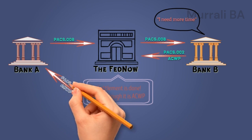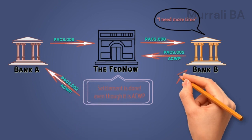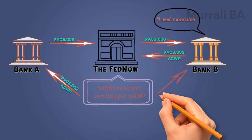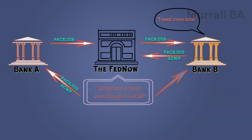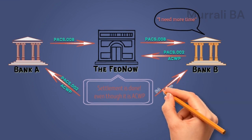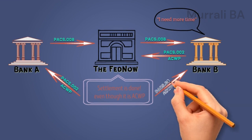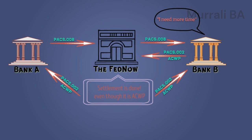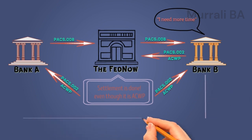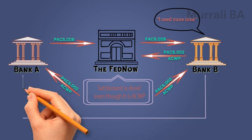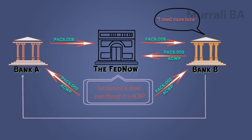FedNow sends the PACS 002 ACWP response to both banks. Upon receiving this response, Bank A immediately understands that the payment lifecycle is not completed yet. Bank A would keep this payment request open for closure until they get the final response back. This response can be a success, rejection, or even blocked.